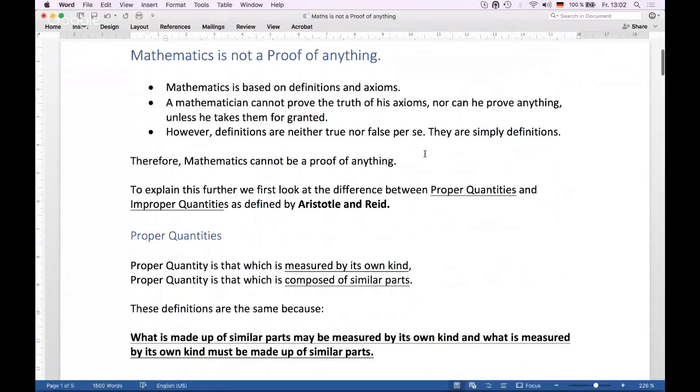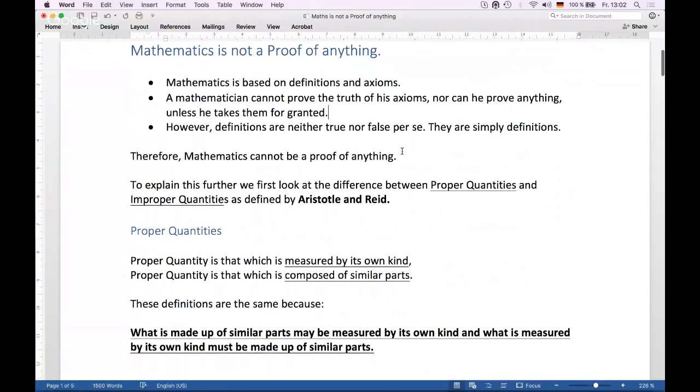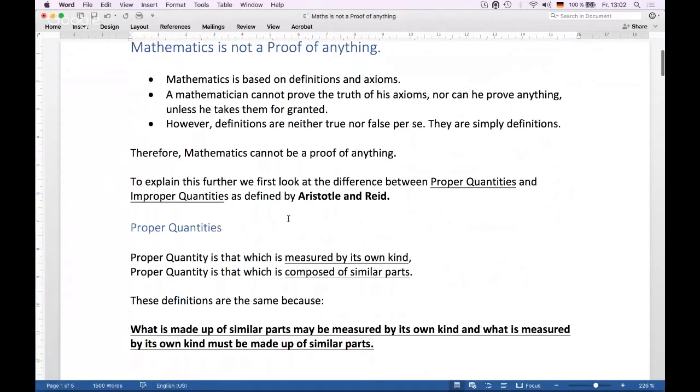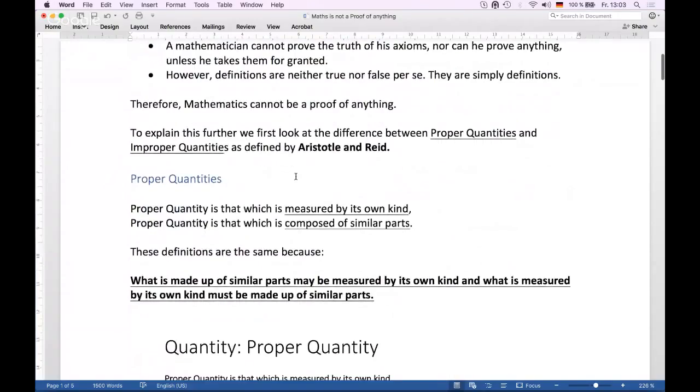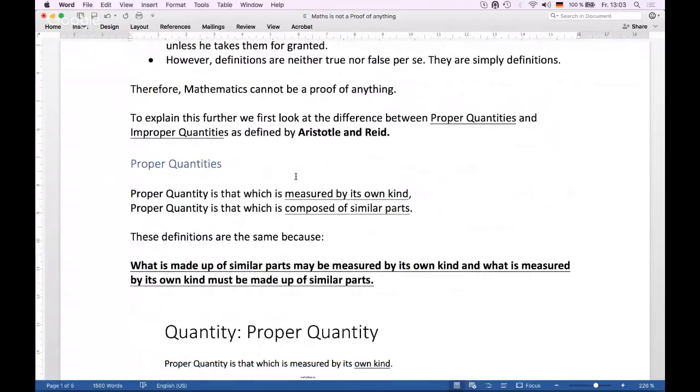So our contention is that mathematics cannot be a proof of anything. I don't really think any mathematician would deny that. But let's just explain it more closely to everybody. The first thing that we should look at is this distinction between proper quantities and improper quantities.